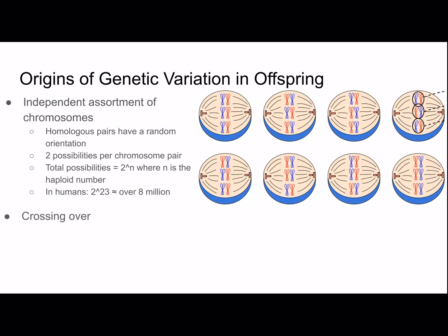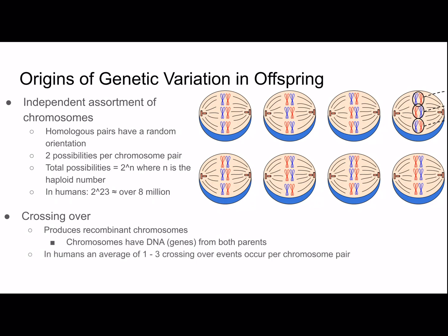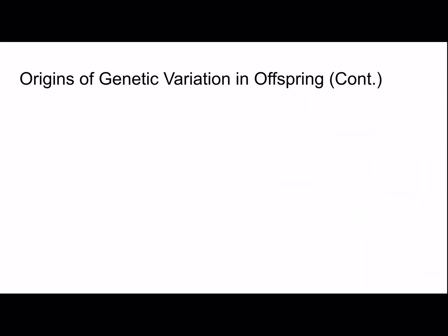There's also crossing over, which produces recombinant chromosomes — chromosomes that have DNA genes from both parents. In humans, an average of 1 to 3 crossing over events occur per chromosome pair. If we combine independent assortment with crossing over, we already have millions and millions of possibilities.